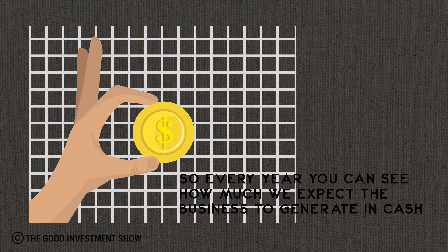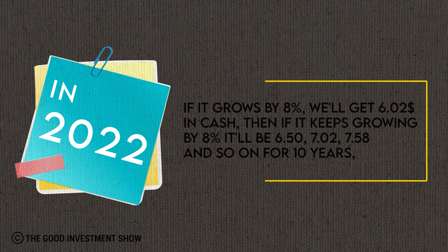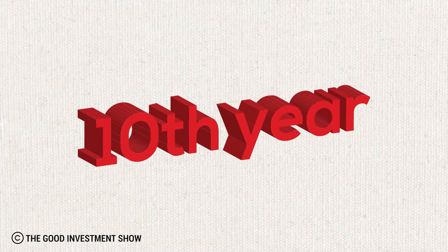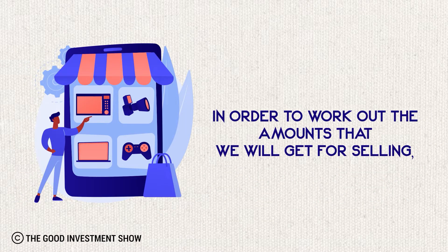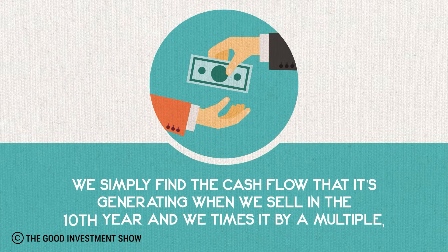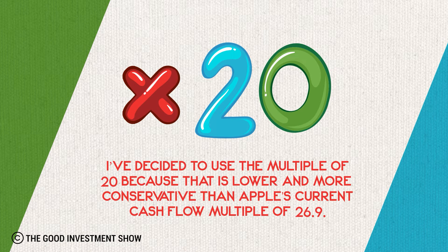Every year you can see how much we expect the business to generate in cash. In 2022, if it grows by 8%, we'll get $6.02 in cash; then $6.50, $7.02, $7.58, and so on for 10 years. On the 10th year, we also get a big lump of cash when we sell the stock — this is called the terminal value. To work out the amount we'll get from selling, we find the cash flow generated in the 10th year and multiply it by a multiple. I've used a multiple of 20, which is lower and more conservative than Apple's current cash flow multiple of 26.9.